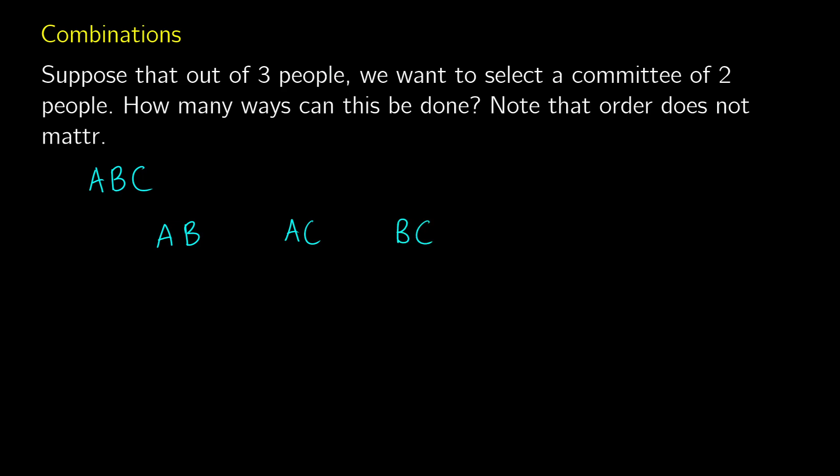We could also choose B, A. We could choose C, A. And we could choose C, B. So there's six possible permutations of this. But if we note something, we can see that these two are the same. These two are the same. These two are the same. So the real answer that we want is three.